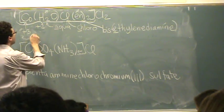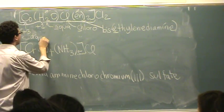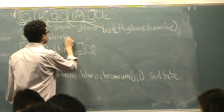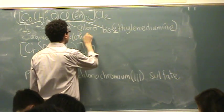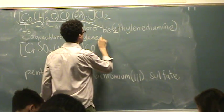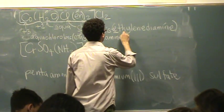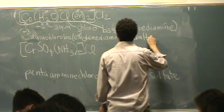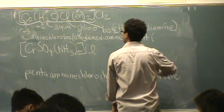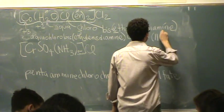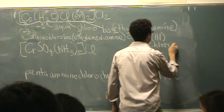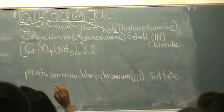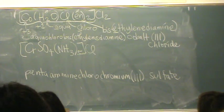Now let's name this. It is aqua, chloro, bis(ethylenediamine) — still one word — cobalt(III) chloride. Any questions on that one? No, that's a crazy one. The other ones are a little easier.